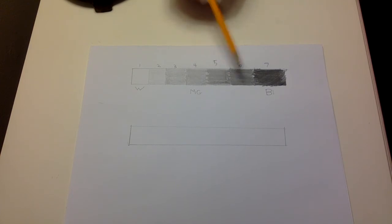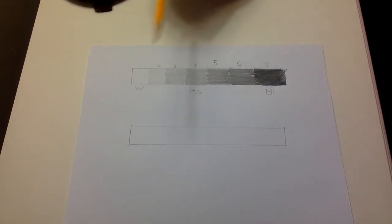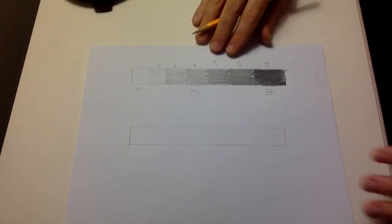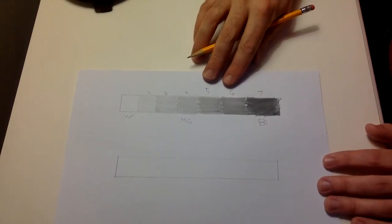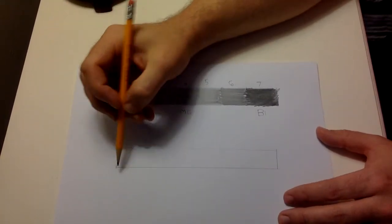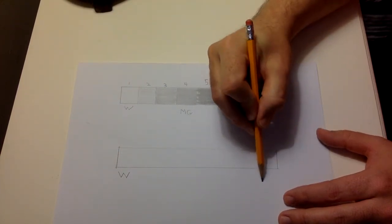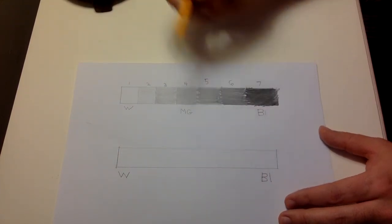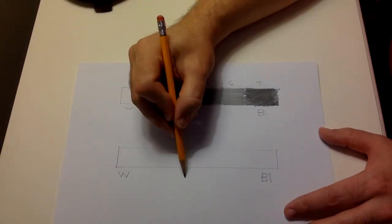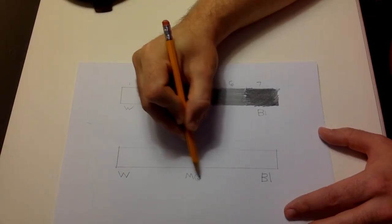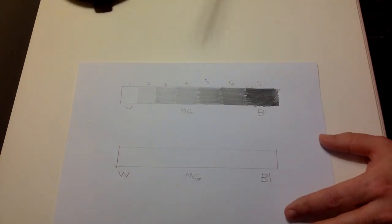Okay. Now this is going to be our smooth gradient. Since this one's a block gradient because they're separated by blocks, this one we're not going to separate by blocks. This one's going to be a little bit trickier, but it's still not going to be difficult. So this side's going to be white, just like before. And this side's going to be black, BL for black. And then I want to make sure that I have middle gray in the middle.